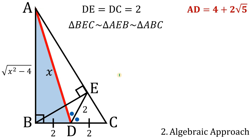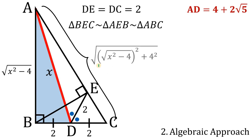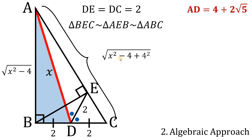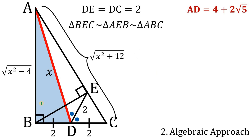For AC, using the Pythagorean theorem on triangle BAC: AC equals the square root of (AB² + BC²) = √((x²−4) + 16) = √(x² + 12). So AC equals √(x² + 12).